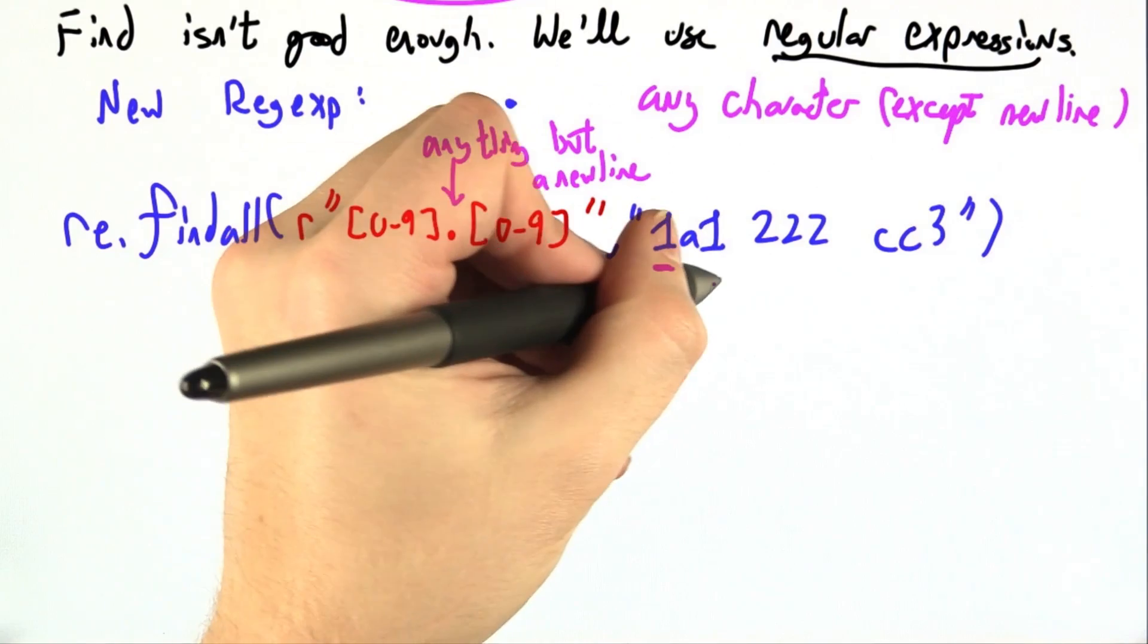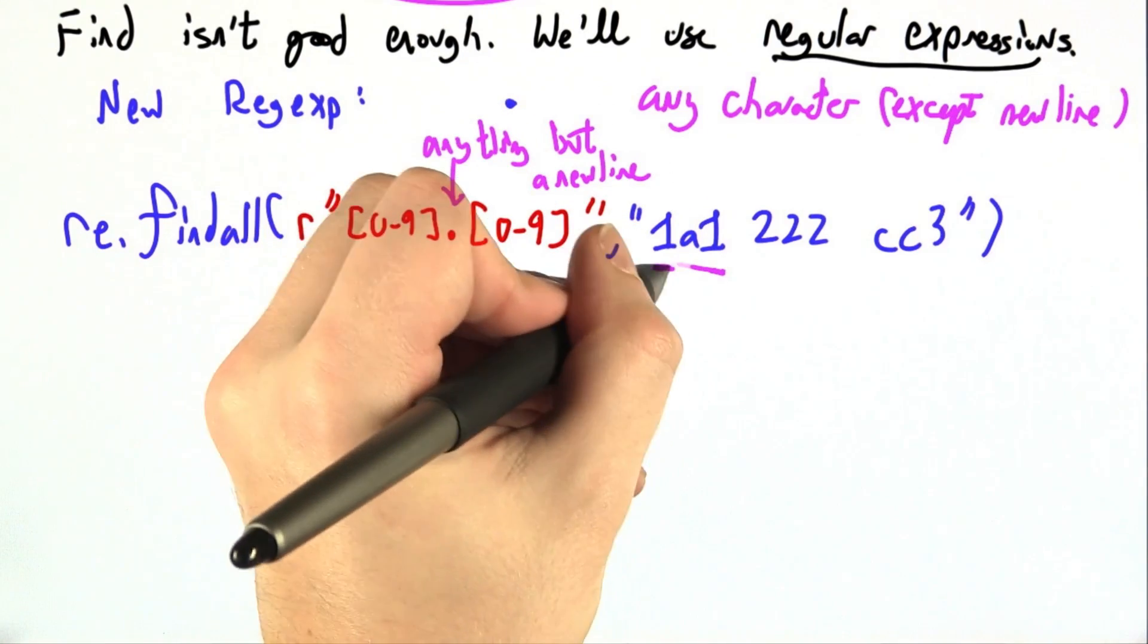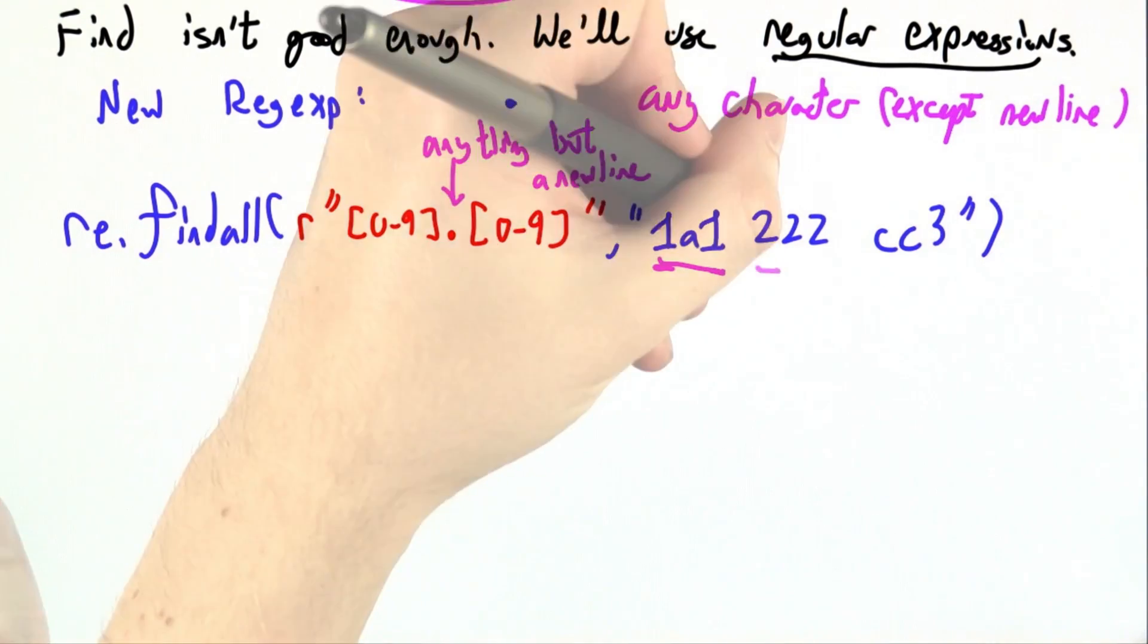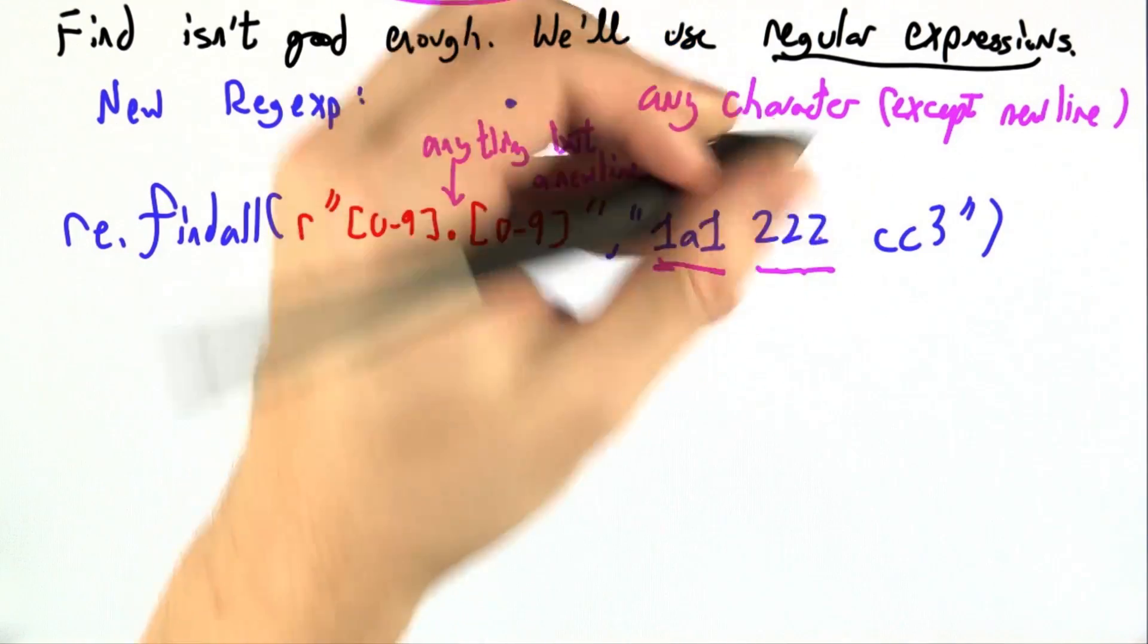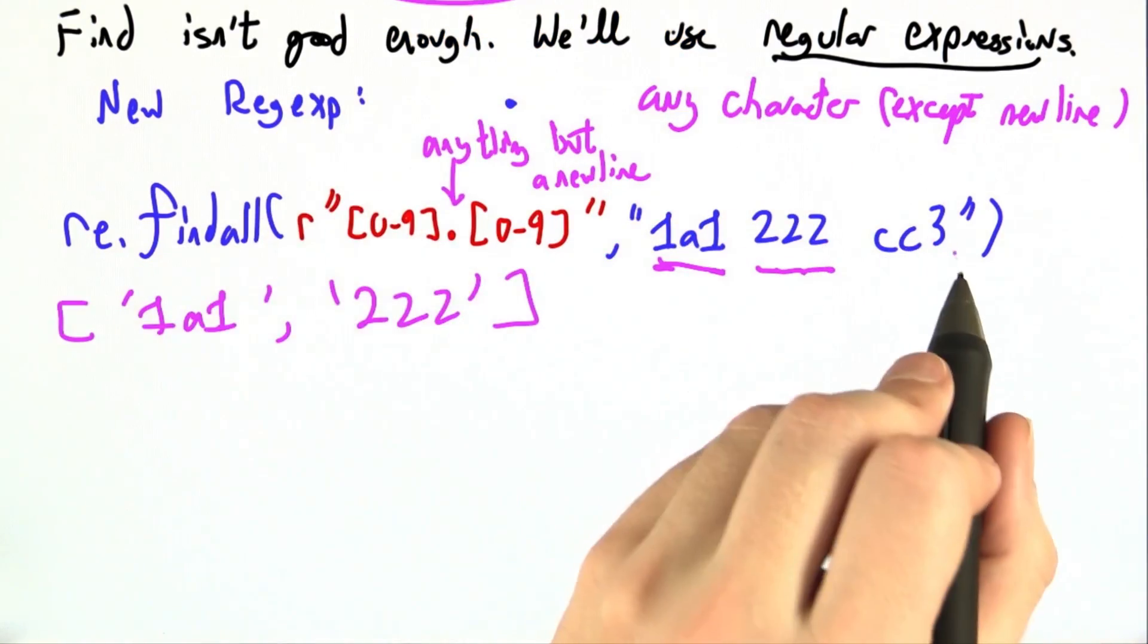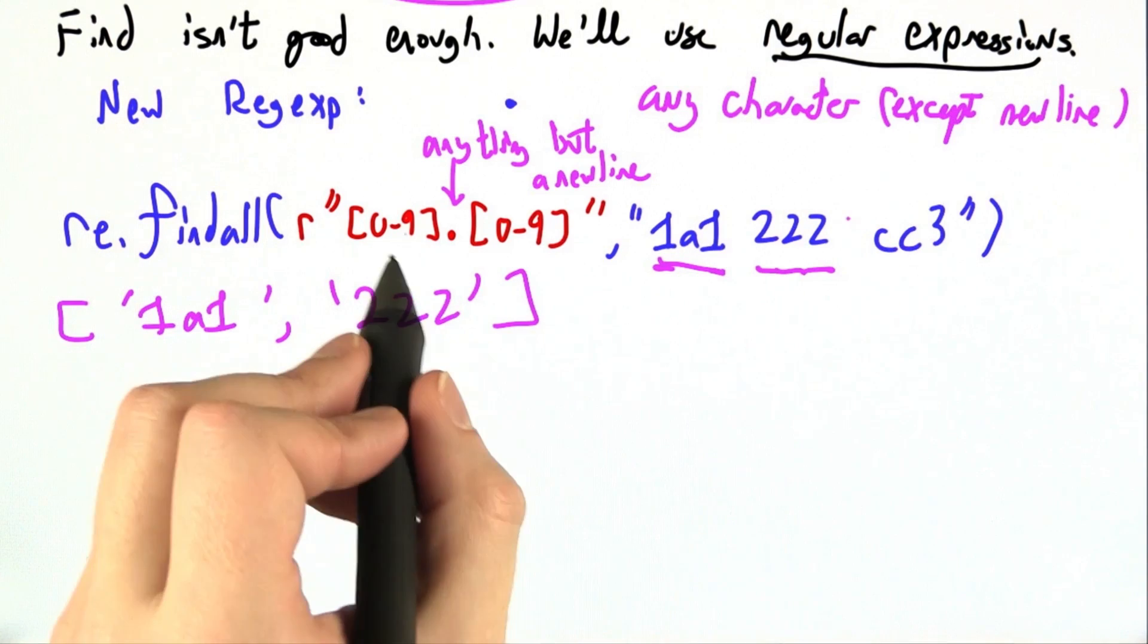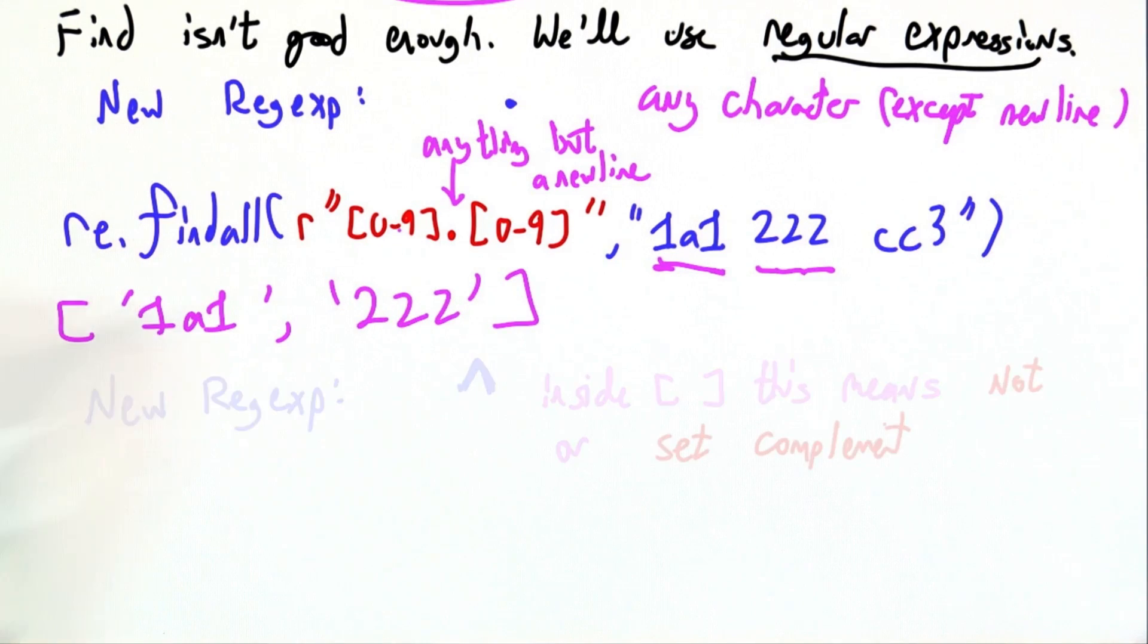So for example, this is a decimal digit, this is another decimal digit, and the a between them is any character. This 2 is a decimal digit, the 2 between them is any character, and this 2 is another decimal digit. This CC3 doesn't qualify because this c is not in 0 through 9. And one more.